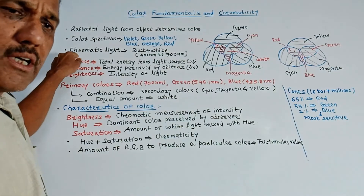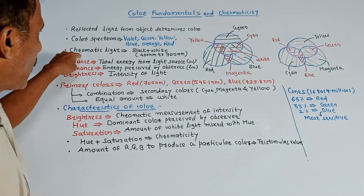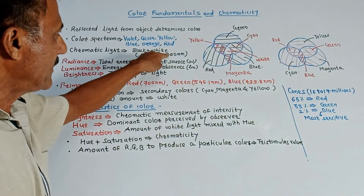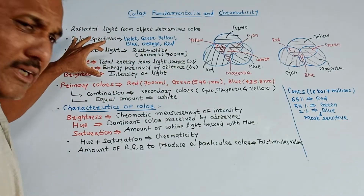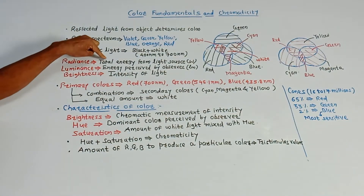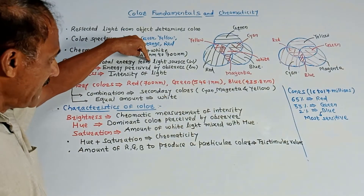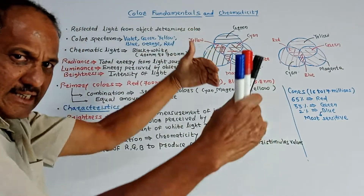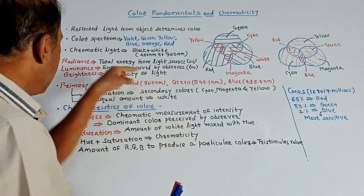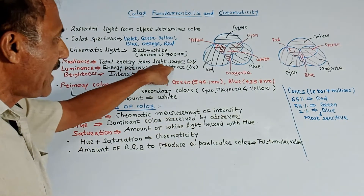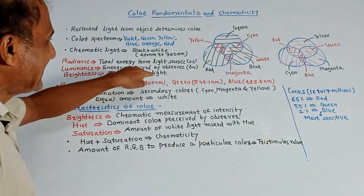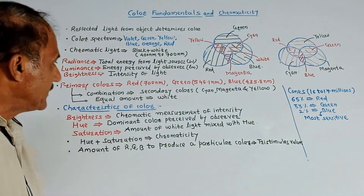When we talk about black and white TV, it is related to chromatic light. Chromatic light is basically a mixing of black and white colors, and the corresponding wavelength is 400 nanometers to 700 nanometers. There are a few important terms related to chromatic light. First is radiance — it is the total energy coming from the light source, so its unit is Watt. Next is luminance — whatever energy is perceived by our eyes is expressed in terms of luminance, and its unit is lumen. Then brightness indicates the intensity of the light.